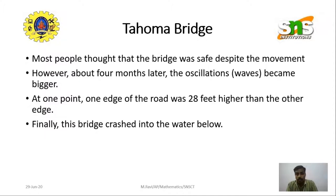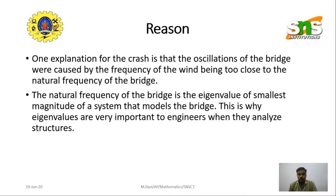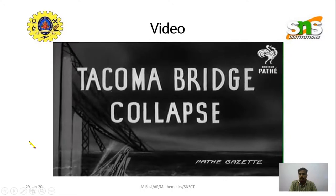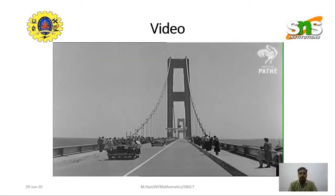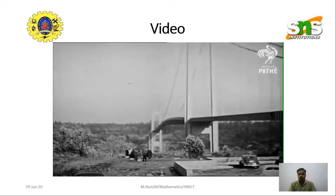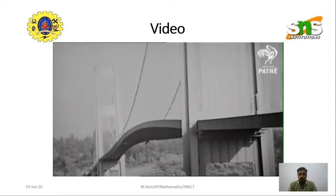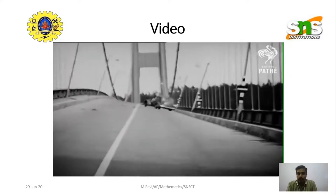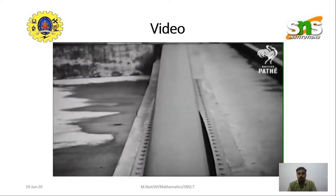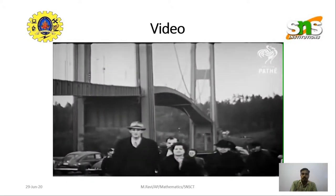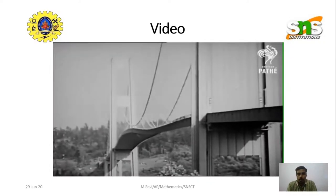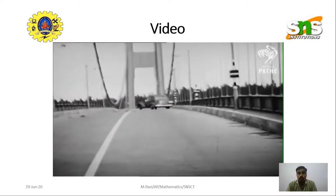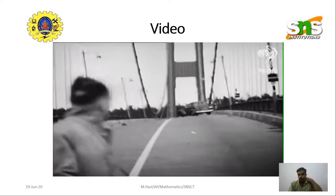The collapse was photographed and videographed by the person who constructed the bridge himself. You can see this Tacoma bridge collapse video — it is available on Google. This is the original bridge constructed in 1940. You can see how it moves like waves when strong wind blows. People in that area were very excited to travel on it. This is the car of the person who constructed the bridge, shot on the day of the collapse.